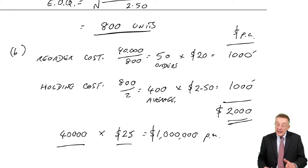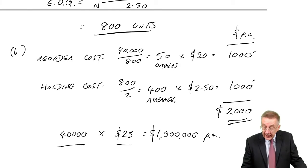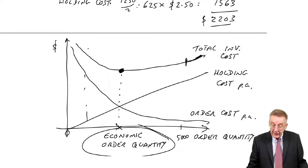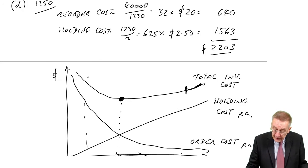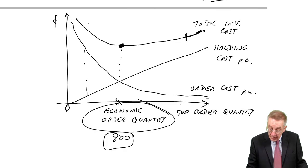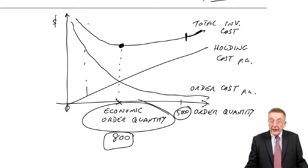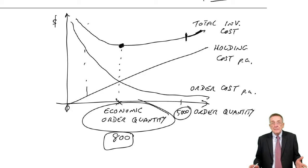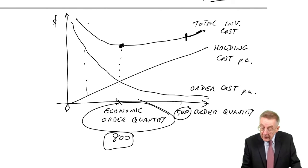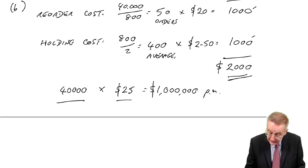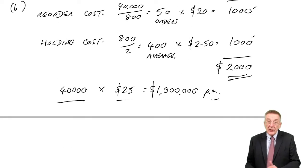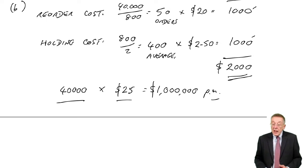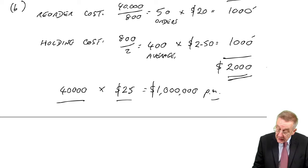We know the inventory costs are minimized at 800. If we ordered 5,000 each time, the inventory cost is bound to be higher. But it could be worth paying more inventory costs if the purchase price is lower. There's no quick way, there's no formula. The only way we can do it is by costing out the alternatives. So let's do it.